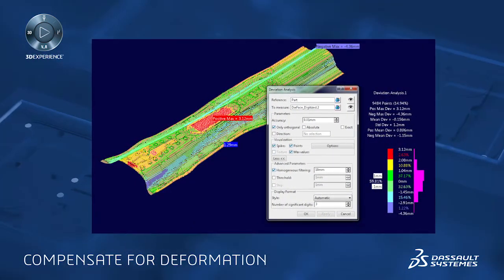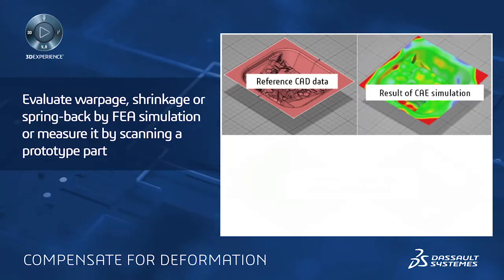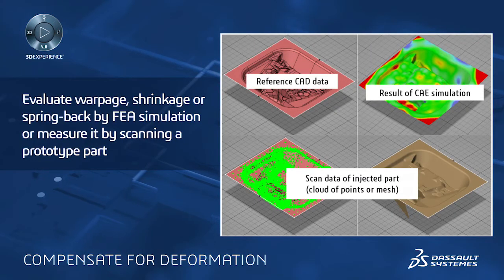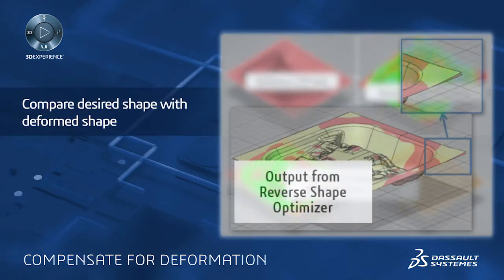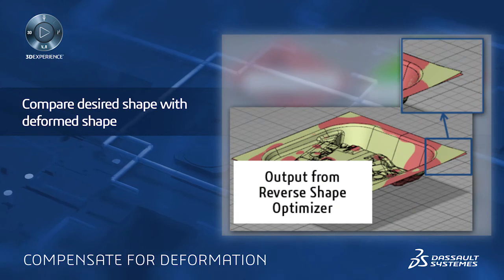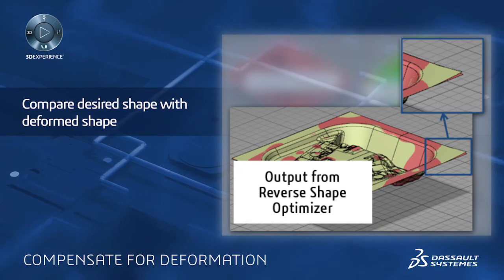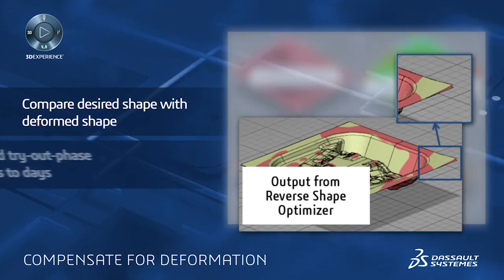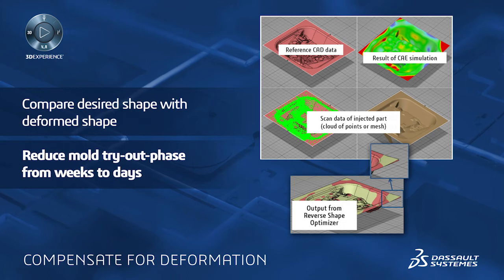CATIA offers a unique, highly productive solution to compensate for forming deformation by comparing the desired real shape of a part with either the shape predicted by a finite element analysis simulation of its behavior during the manufacturing process, or the actual dimensions digitally scanned from a prototype part. Powerful surface editing capabilities can then be used to quickly and accurately morph the tool shape to compensate for this deformation while preserving the high quality of the desired nominal shape. These capabilities can drastically reduce both the number of trial tools needed and the overall tool development time, and can typically reduce the tryout phase of injection mold design from weeks to days.